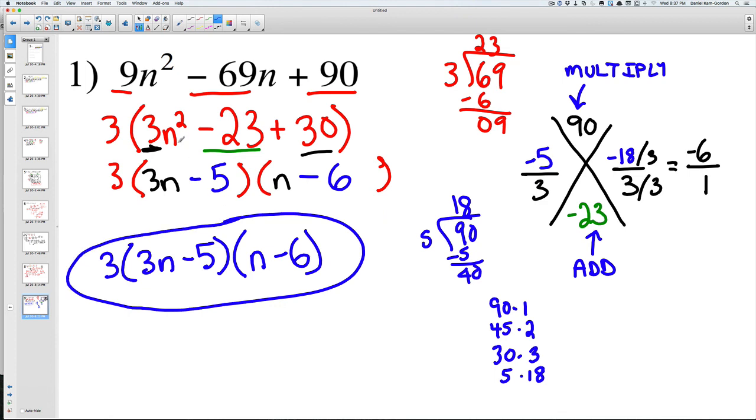So you can see these problems, when you have a coefficient in front, they do take a little bit longer. But if you use this X method, it's fairly simple once you've factored out any common factors to go ahead and fully factor the problem.